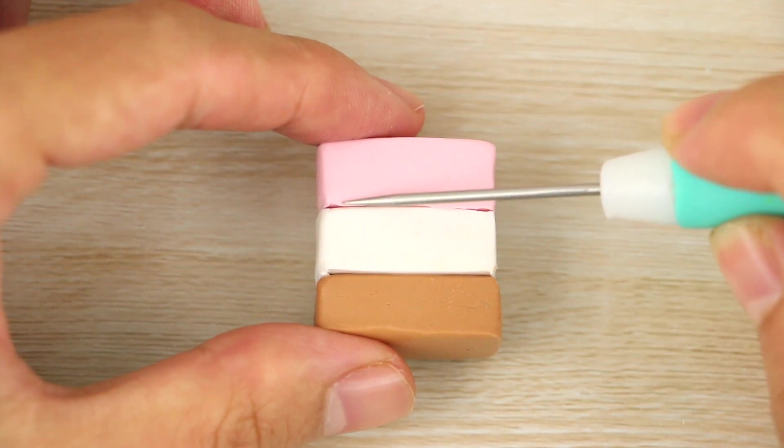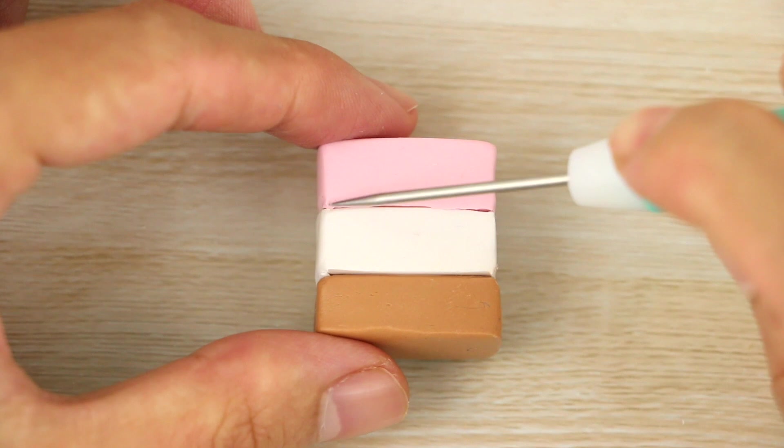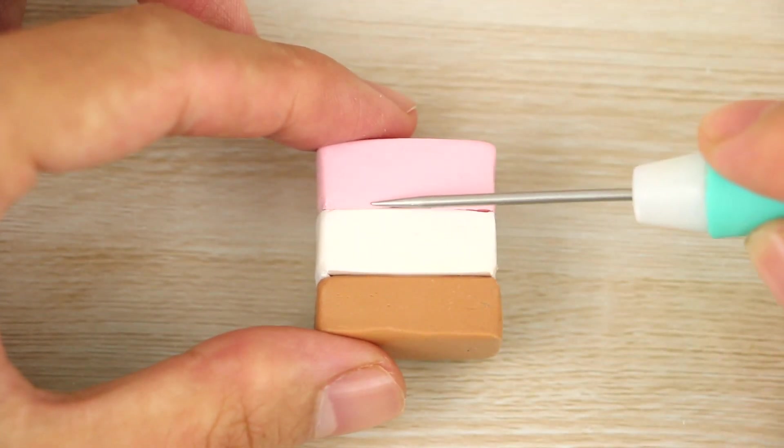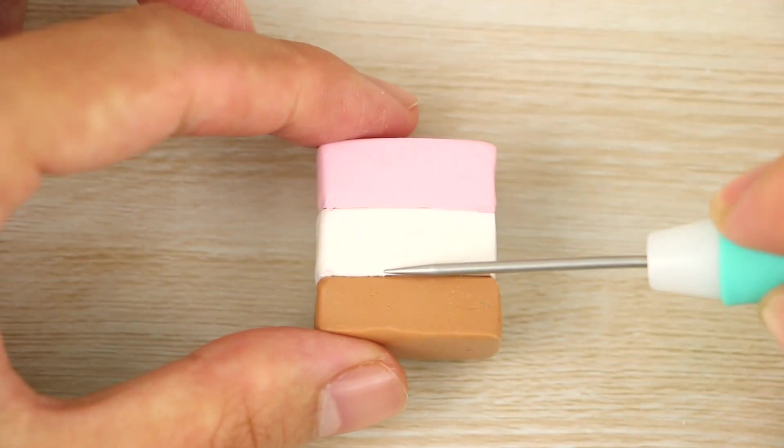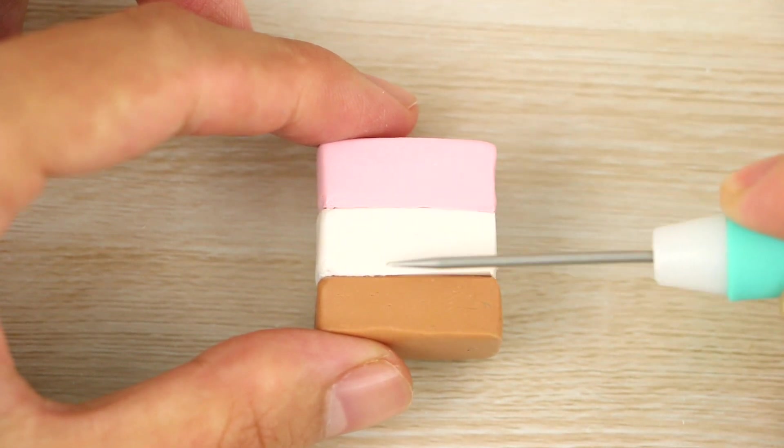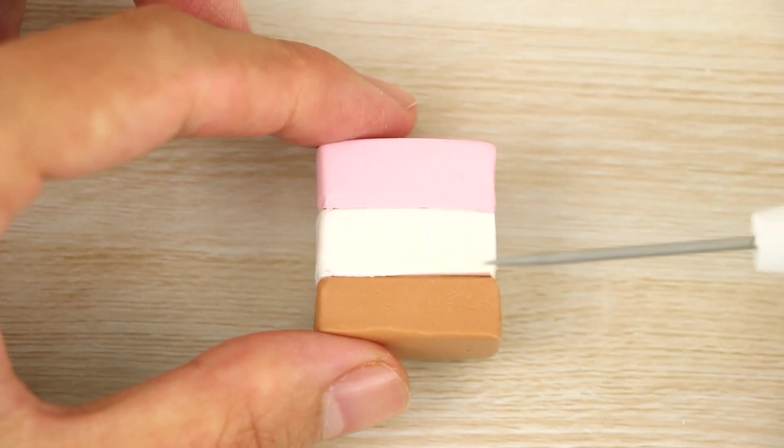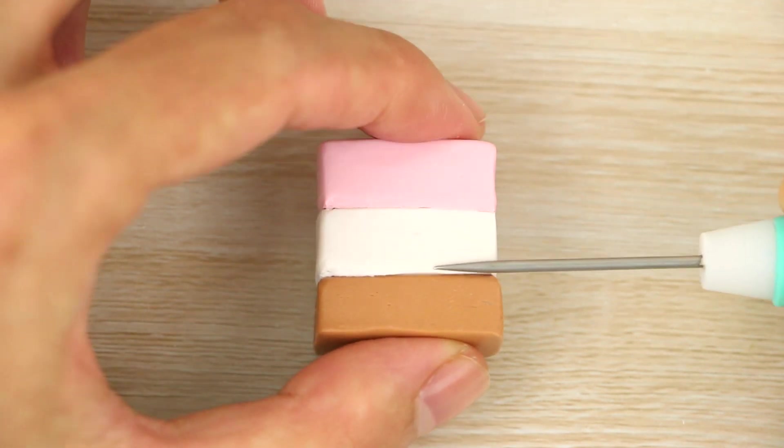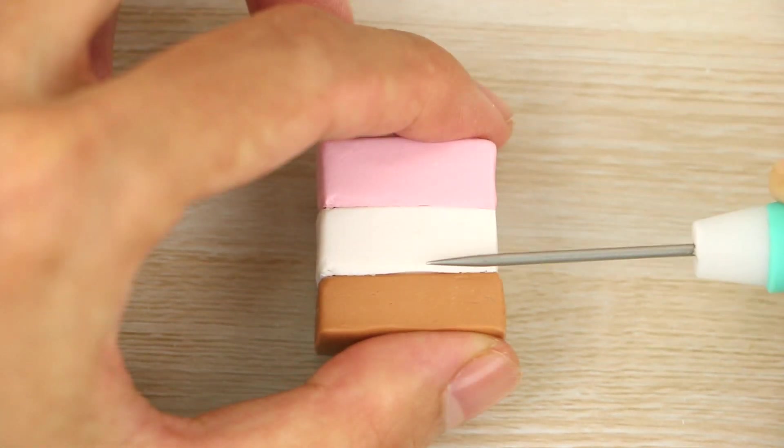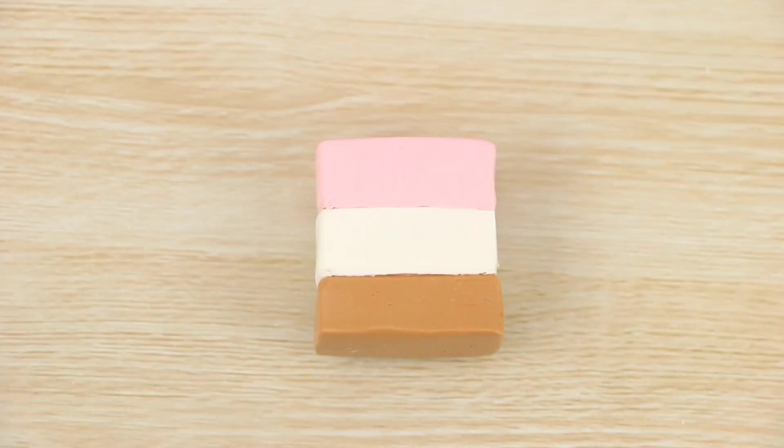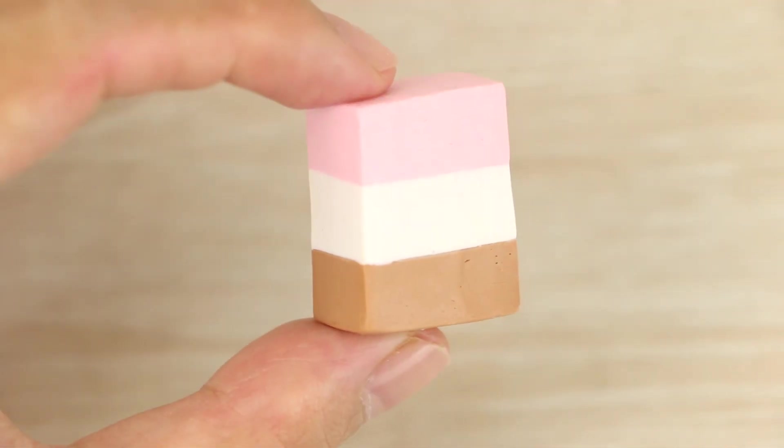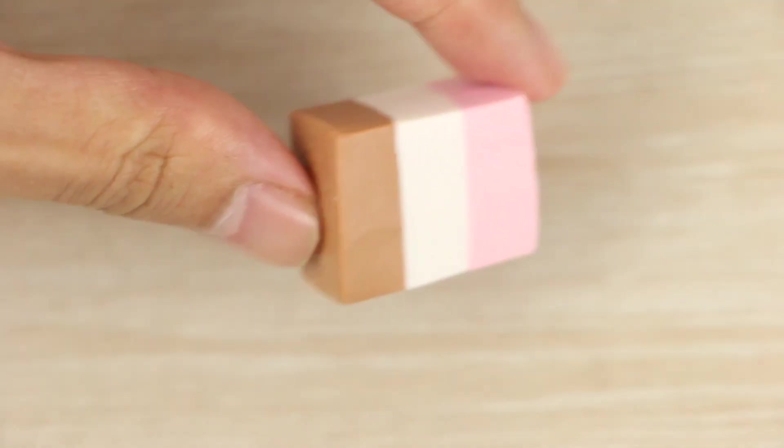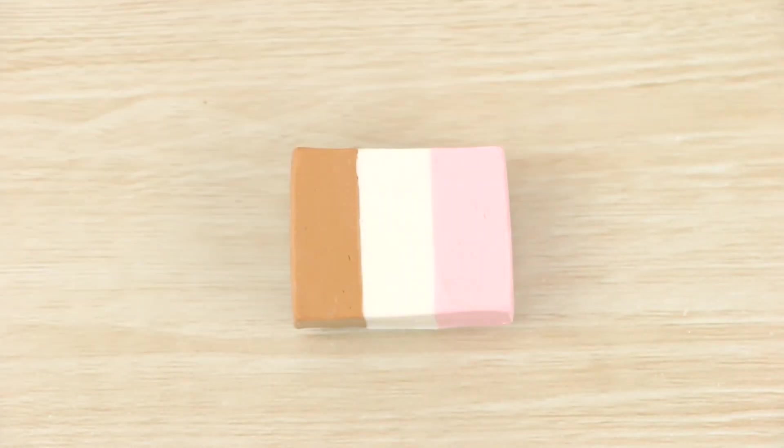Then I'm just using my needle tool to smooth the edges of the colors together so that there aren't any gaps. And then repeating that on all sides. I'm then placing it onto my work surface so that the lines are vertical and the short side is facing me. And the colors are in the order of brown, white, and pink.